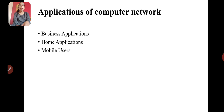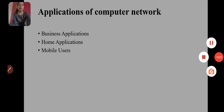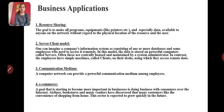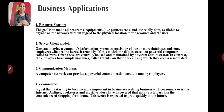Applications of computer networks. First, business applications. Second, home applications. Third, mobile users. In business applications: first is resource sharing. Second is the client-server model — data is stored on a powerful computer called the server and shared by many simple client machines. The main data is stored on the server and the clients can access it.